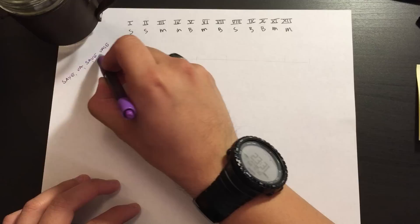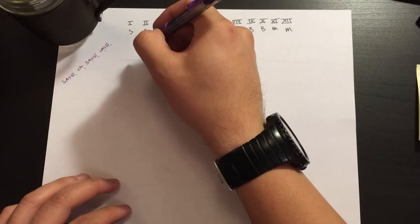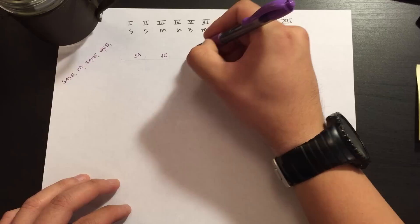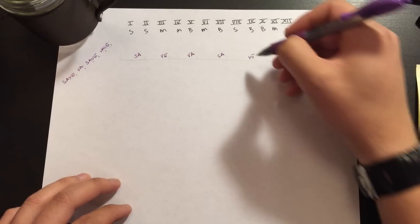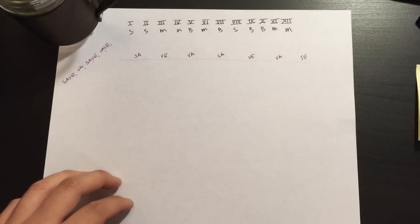So I'm going to write these into seven columns. S-A, save, V-A, face, S-A, save, and then V-A-S-E, vase.